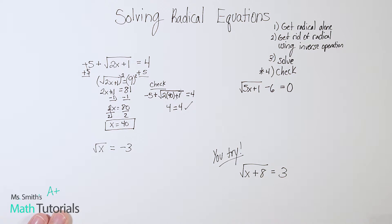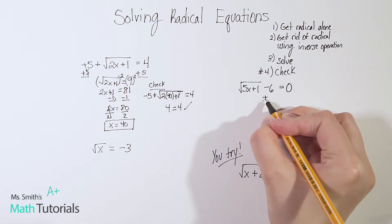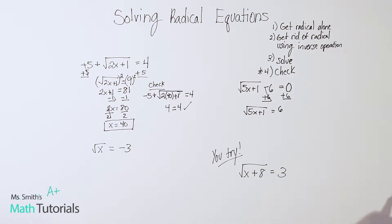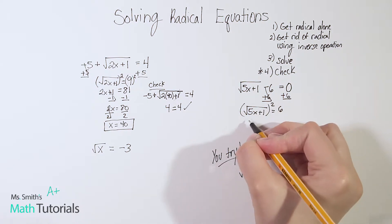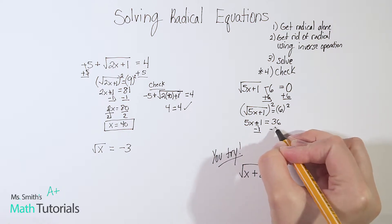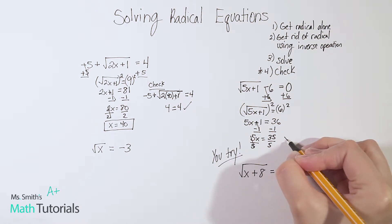Let's try this one. First step: we've got to get the radical alone. It's not currently alone because it's got that minus six on the side with it. So I've got to add six to both sides. So we've got square root of five x plus one equals zero plus six, which is six. Now that the radical is alone, I want to get rid of the radical using the inverse operation — this is a square root, so I need to undo it by squaring it. All that I have left is just whatever was underneath. But if I square one side, I've got to do the other — six squared is 36. So now we're just going to solve: five x equals 36 minus one, which is 35. We divide out the five and get x equals seven.